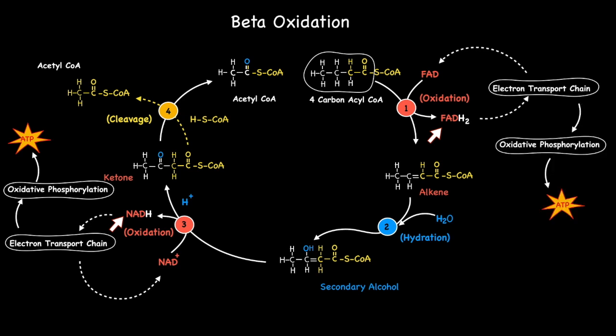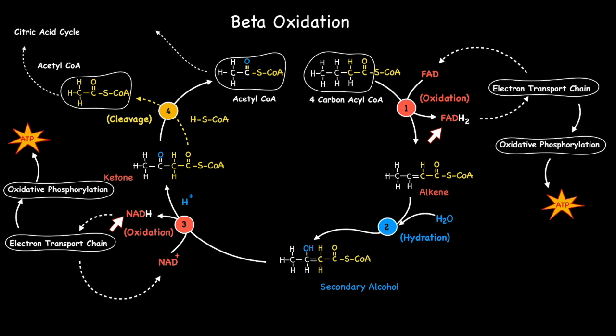While connecting to the electron transport chain, beta-oxidation also links to the citric acid cycle. It achieves this through each acetyl-CoA produced. Each unit of acetyl-CoA produced during beta-oxidation acts as an entry point to the citric acid cycle.